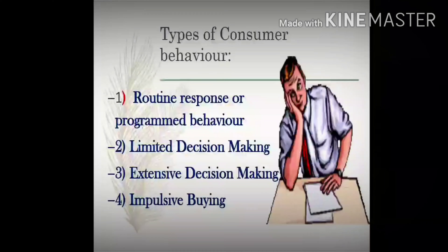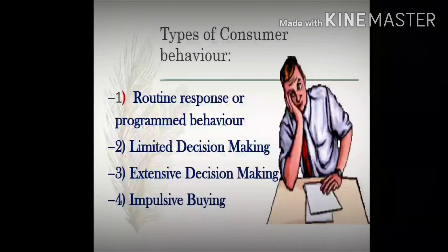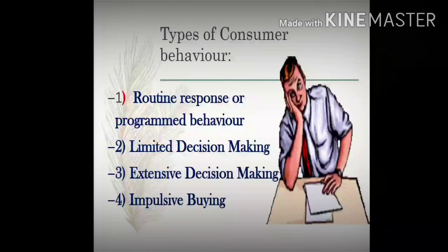The third type is extensive decision making, noticed when the consumer is buying a very expensive or luxurious item, such as a car. Even a rich person buying a car may repeat the purchase only after at least one year, while a middle-class person may not think of buying a new car for five years. That is called extensive decision making. As we move from routine to extensive decision making, marketers must put in increasingly more effort and develop more strategies to influence the consumer's decision in their favor.